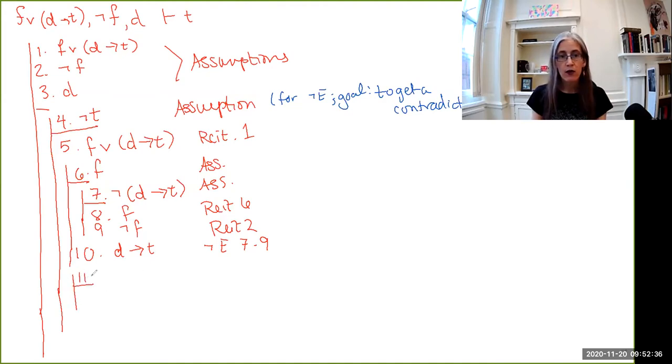Now I just need to show that the same thing holds with the other disjunct. So here I have another assumption. Well, this is easy. If I assume that D implies T is true, then I can just reiterate it. Bam.